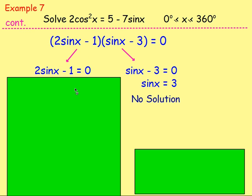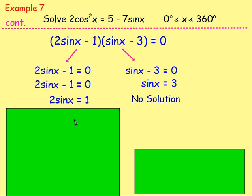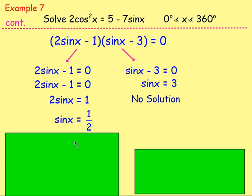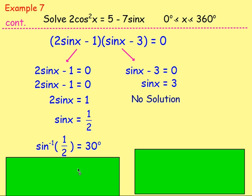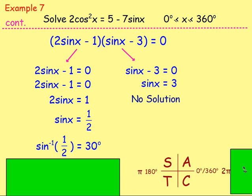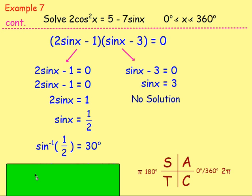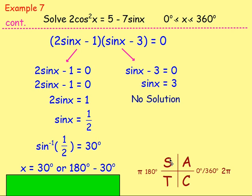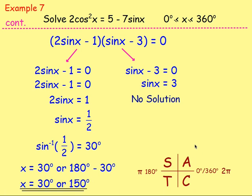For the other bracket: 2sinx minus 1 = 0. Add one, divide by two: sinx = one half. Inverse sine of a half equals 30 degrees — an exact value, so this could be a non-calculator question. Sine is positive in quadrants one and two, so using CAST: x equals 30 degrees or 180 minus 30 equals 150 degrees. Both answers are between 0 and 360 degrees.